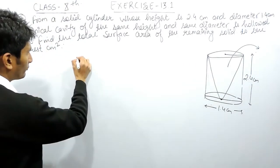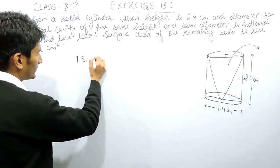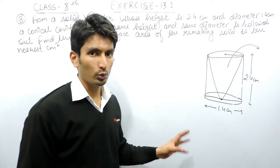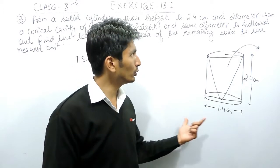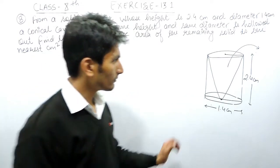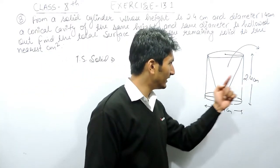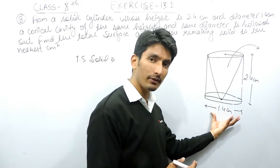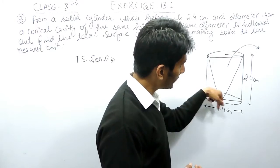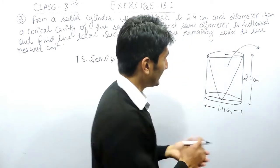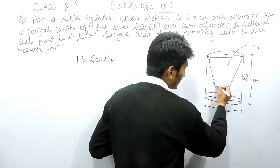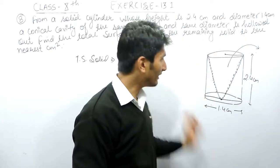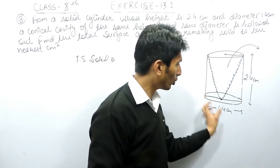Now you have to find the total surface area of this remaining solid — that means the surface which is visible to you. The curved surface area of the cylinder will be visible, plus the area of the base will be visible. And if you see from the top, a conical cavity will be seen inside the cylinder, so the curved surface area of the cone will also be visible. So these three surfaces are visible to me.